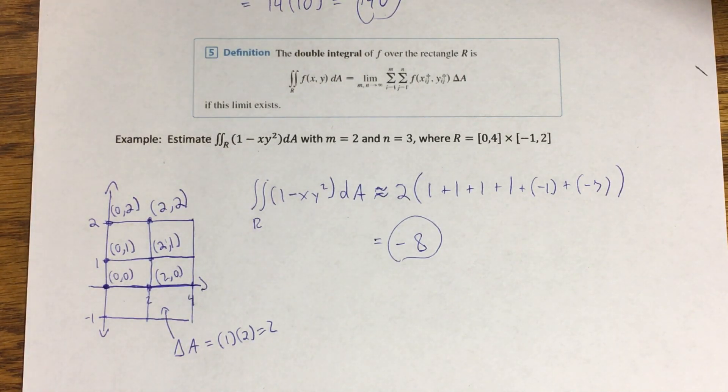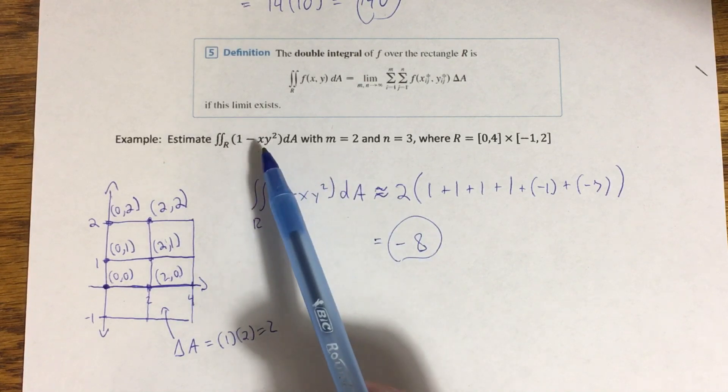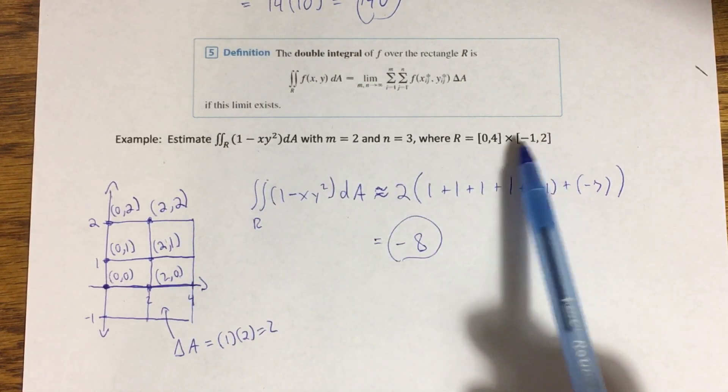So this is coming out negative because on the rectangle that we're concerned with, at least a good chunk of this surface is under the xy-plane.